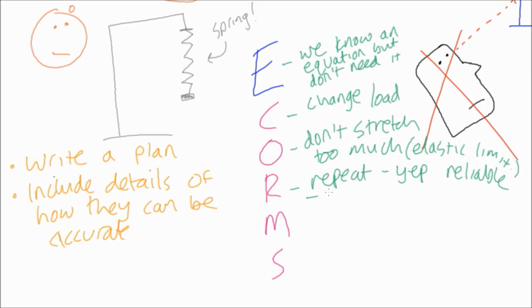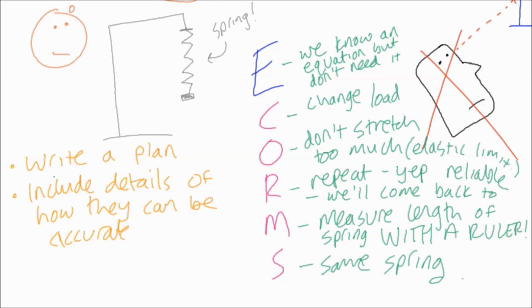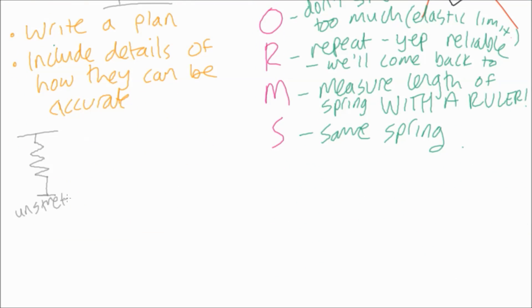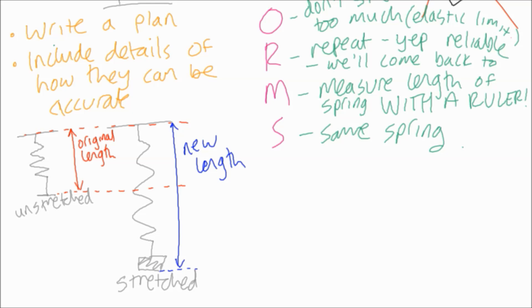Repeats, well we're probably going to do it a couple of times so it's worth mentioning that we're going to repeat. What are we going to measure? Well we're going to measure with a ruler, funnily enough, and we're going to measure the extension. So this I guess could come under other: we don't measure the extension directly. We measure the length of the spring, then we measure the length of the spring when it's been stretched, and then from that stretched spring we can find what the extension was.